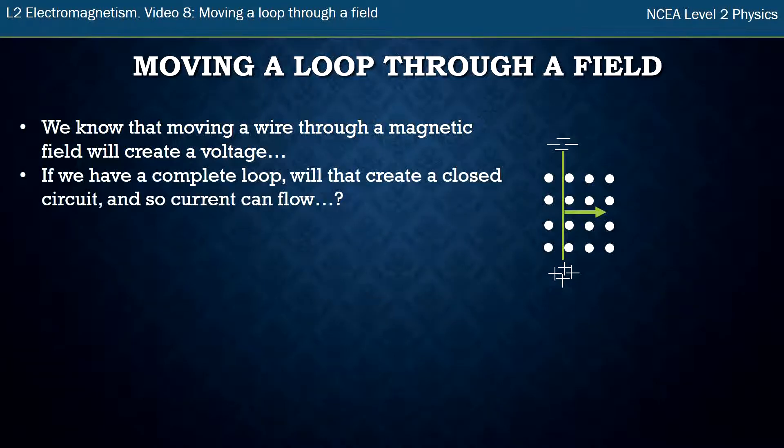The question is if we have a complete loop moving through the field, will that now have a closed circuit? And when we have a voltage in a closed circuit, that means current flows—that means electricity flows through the circuit.